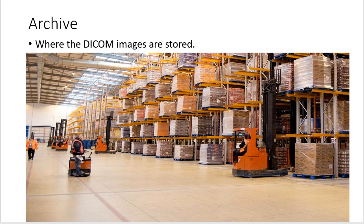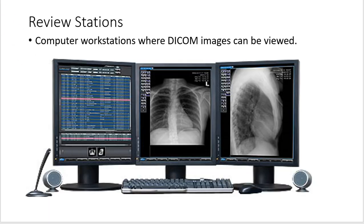The archive is where DICOM images are stored. Think of it like a warehouse — if we could look inside the archive server, it would look like rows and rows of images stacked up, waiting to be retrieved and viewed at workstations. And you see this person in the image here — he looks completely lost, with no idea where he's supposed to go. That's kind of what it feels like navigating a disorganized archive.